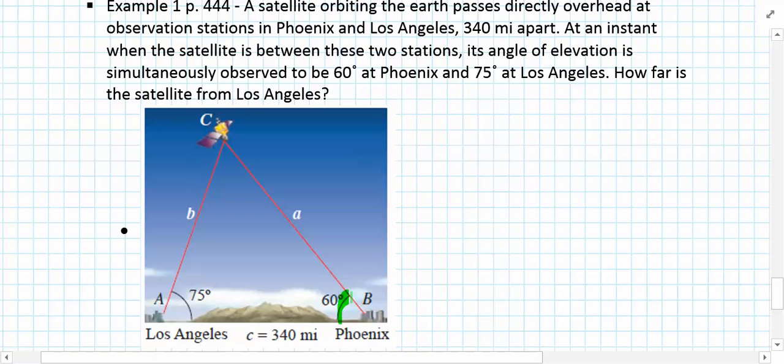So we have the angle measure here: 60 degrees angle of elevation at Phoenix and 75 degrees at Los Angeles. We know the distance between those two is 340 miles. Our objective is to find how far the satellite is from Los Angeles, so we're looking for lowercase b as our length measurement.